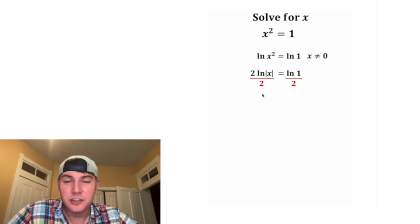Next, let's divide both sides by 2. These 2's cancel, so on the left-hand side, we just have the natural log of x. And on the right-hand side, another way to rewrite this is 1 half natural log of 1.